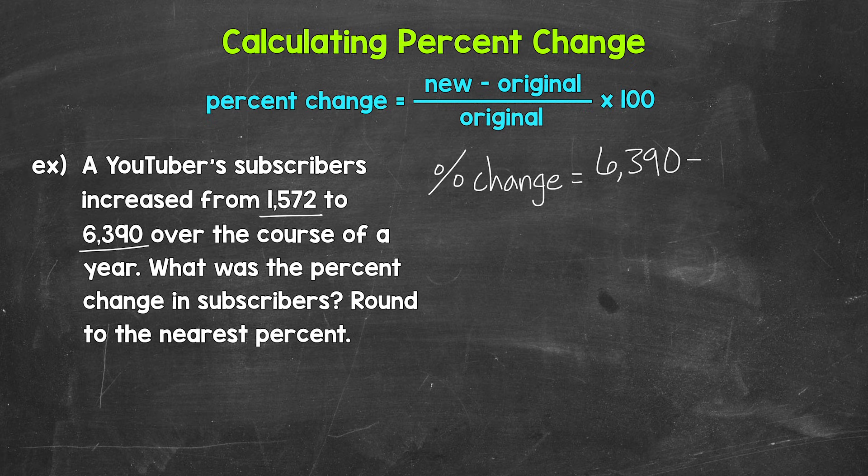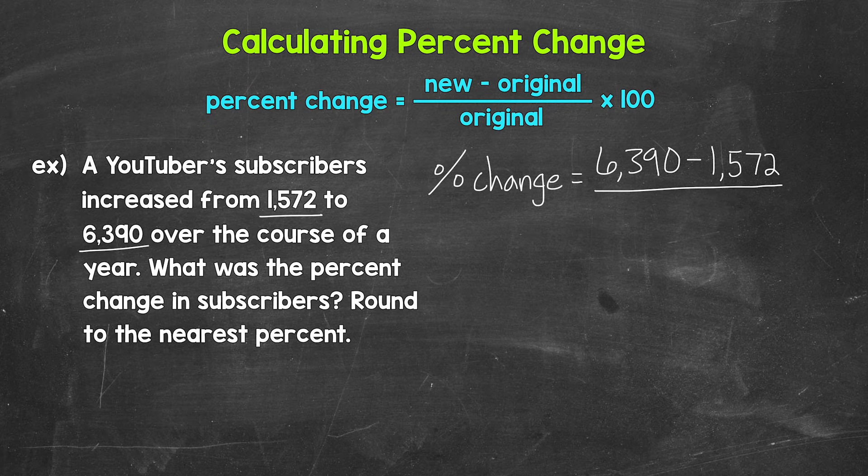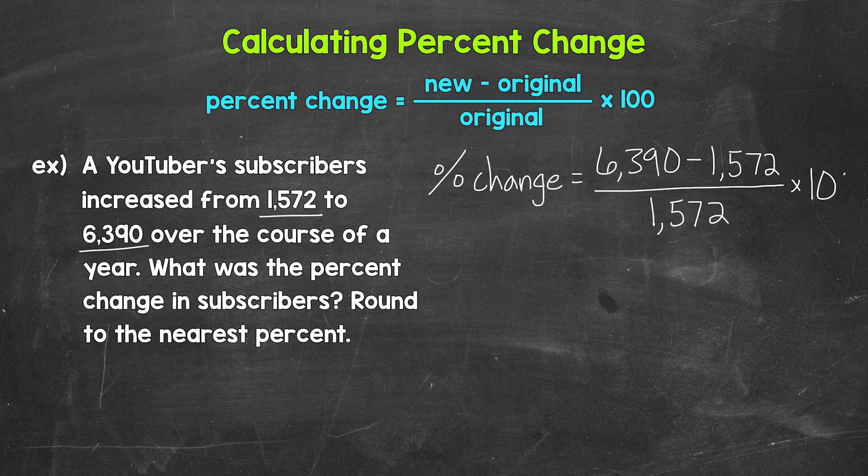That's the starting value. The YouTuber went from the starting value of 1,572 to the new value of 6,390. So minus 1,572. And then we divide by the original value, which again is 1,572. And then we multiply by 100. So let's work through this.